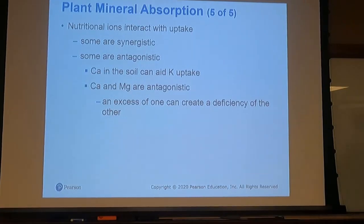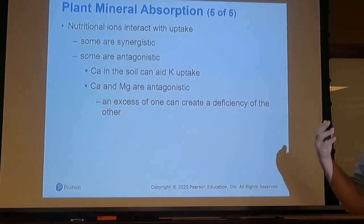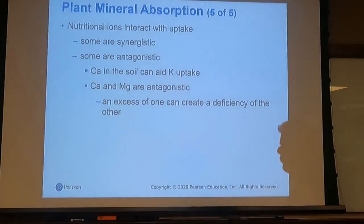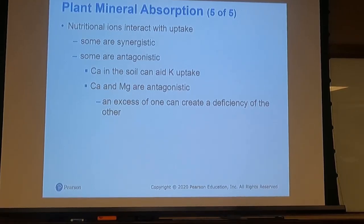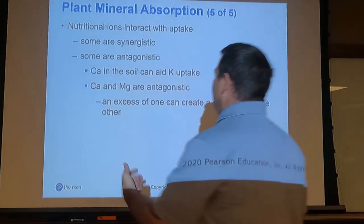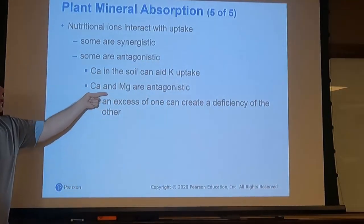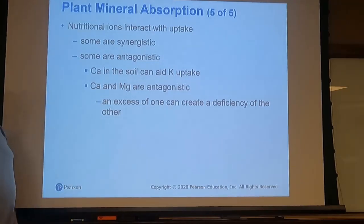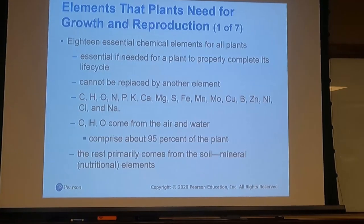These elements in the soil — nutritional cations or anions — can have a synergistic effect where A plus B is much greater than C, or an antagonistic effect. For example, calcium will help in the uptake of potassium, but calcium and magnesium are antagonistic mainly because they are both plus-two cations.